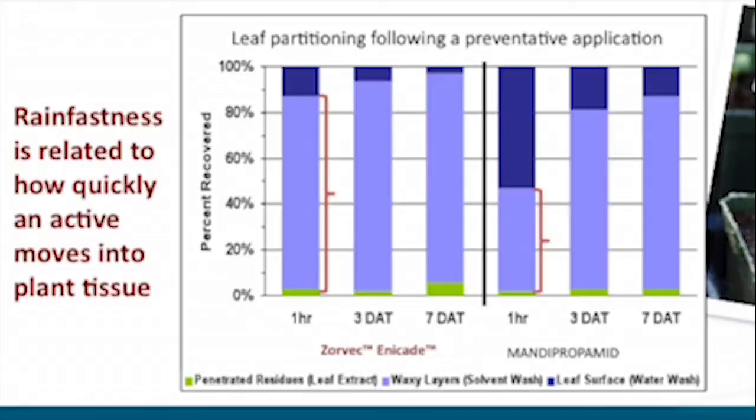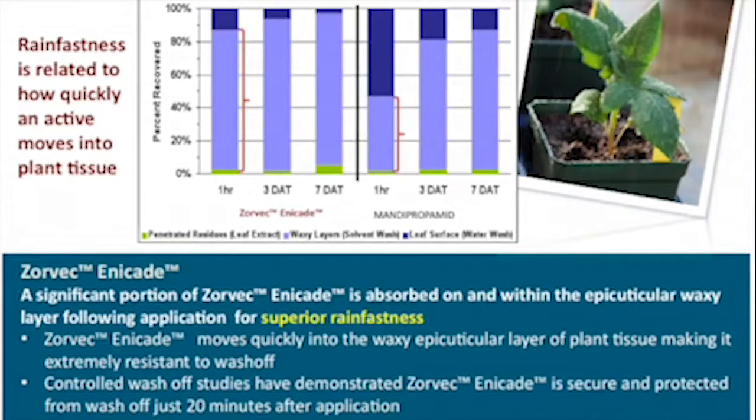The main point of this graph is that it penetrates very quickly. Compared to a competitive alternative, where after an hour only 40–50% has penetrated, some studies have shown that within 20 minutes up to 80–90% of this product is in the leaf and stays there.